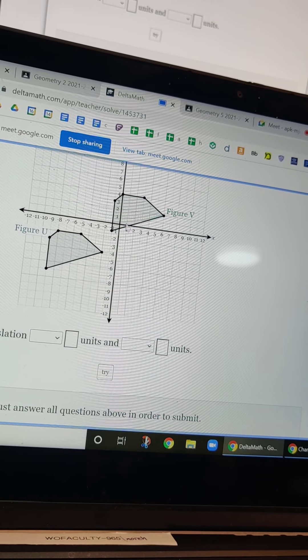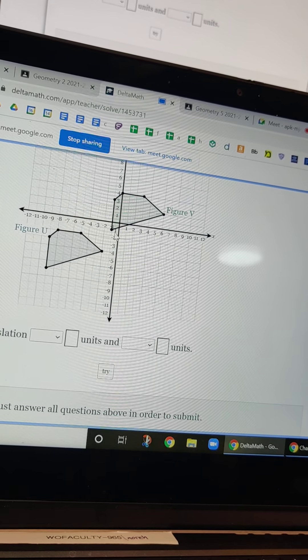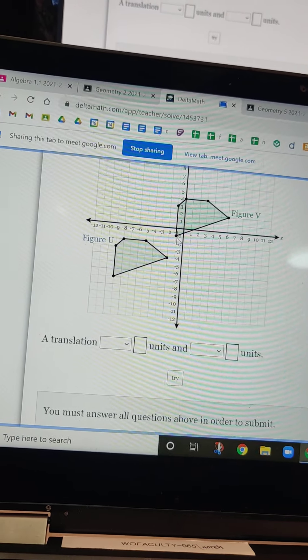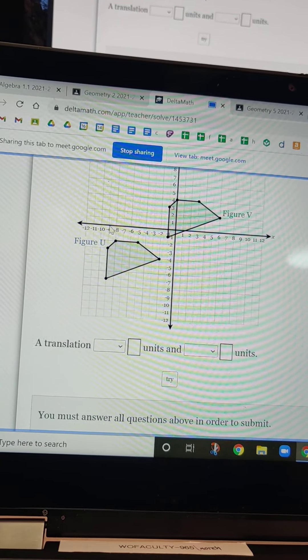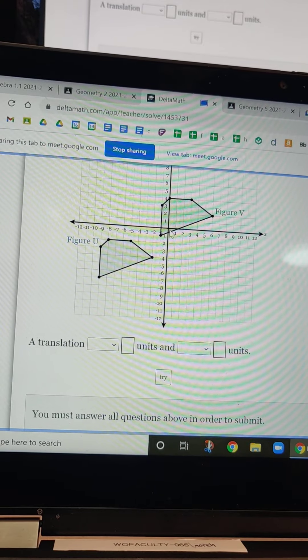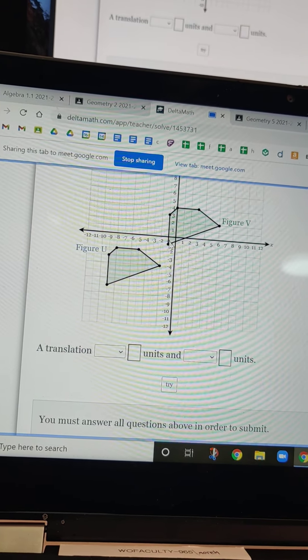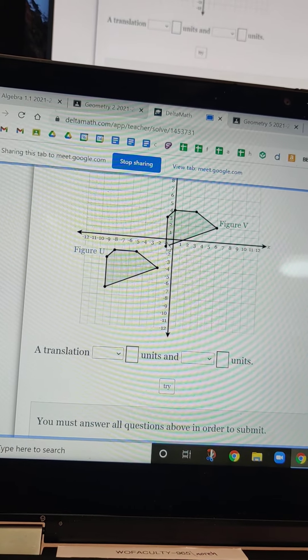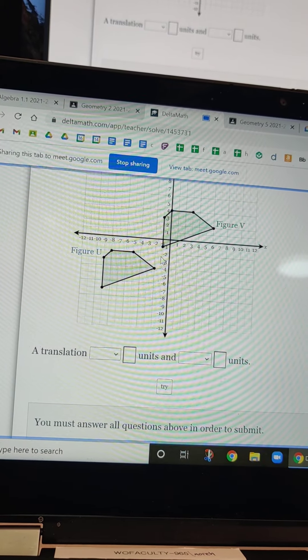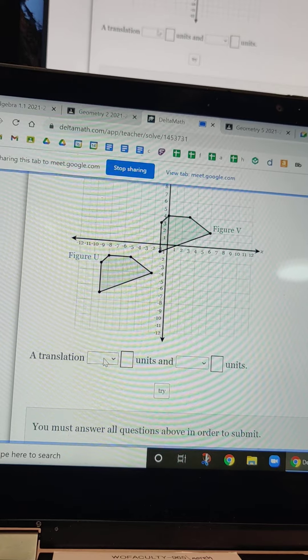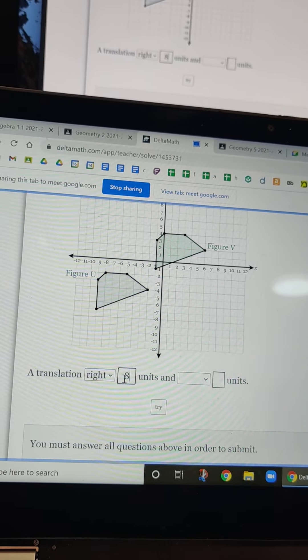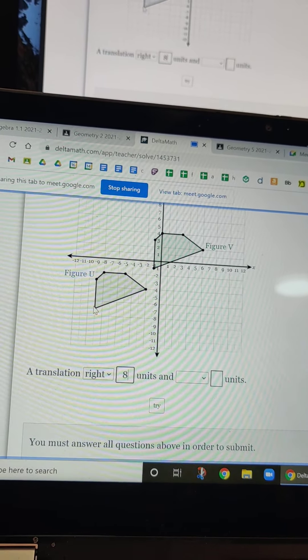So yeah, this is good. So let's say I'm going to compare this bot. Now we're going from U to V. Yeah, from the blue to the green. So I'm going from this to this, right? So the shortcut I can do is this is at negative nine, right, at this point. And the other one is at negative one. So I can just go like negative one minus negative nine is eight. So I went, oh wait. Yeah. So I went right eight.